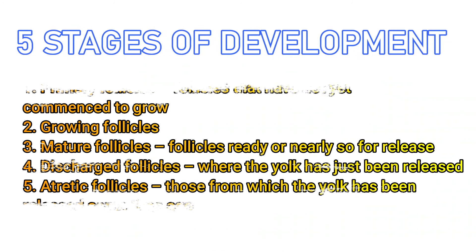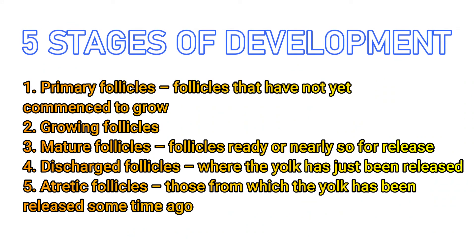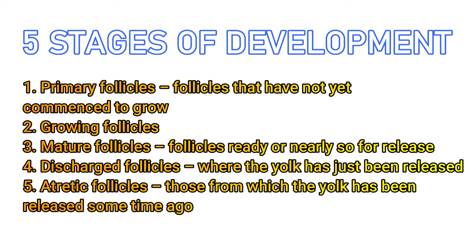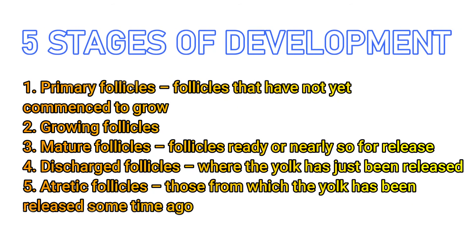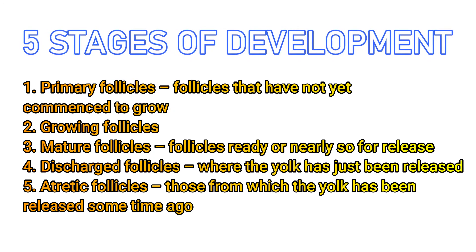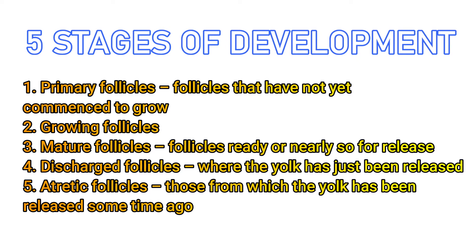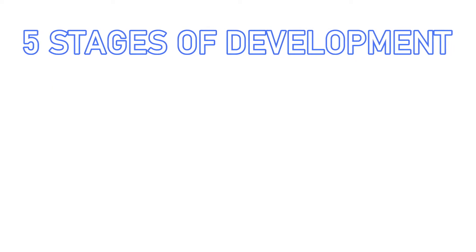It is possible to find five stages of development in the active ovary. First, we have the primary follicles — those that have not yet commenced to grow. Next is the growing follicles. Third is the mature follicles, or the ones that are ready or nearly so for release. Fourth is the discharged follicles, where the yolk has just been released. And lastly, we have the atretic follicles, those from which the yolk has been released some time ago.